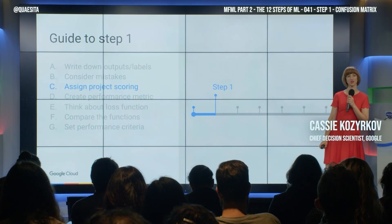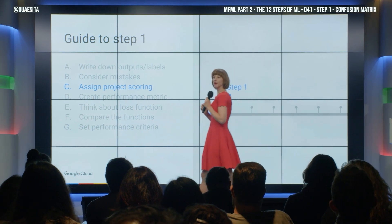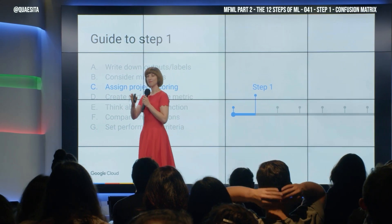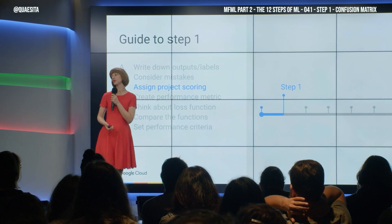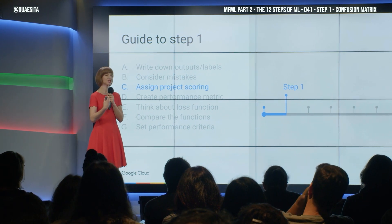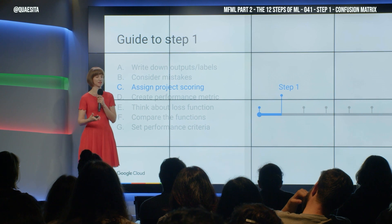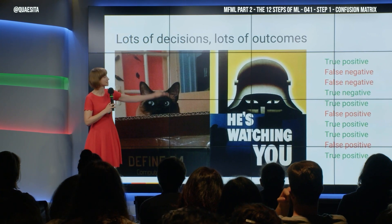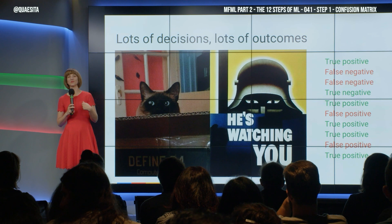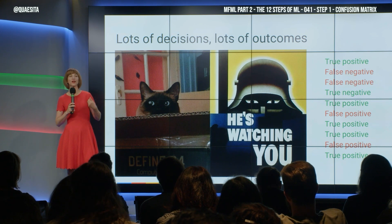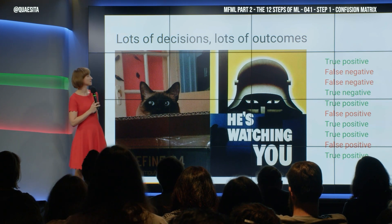Next: assign project scoring. Figure out how to score many, many decision outputs, and expect that this system will make mistakes. Which mistakes are worse than which other mistakes? You're not going to use machine learning to just make 10 decisions for you — we're talking hundreds, thousands, millions, billions, that sort of scale.